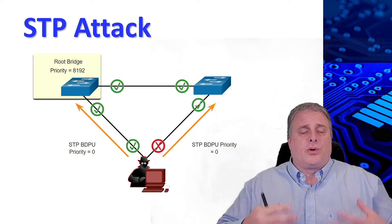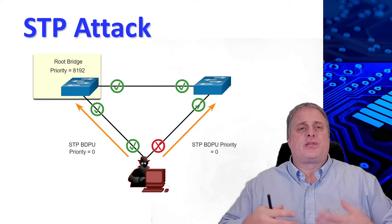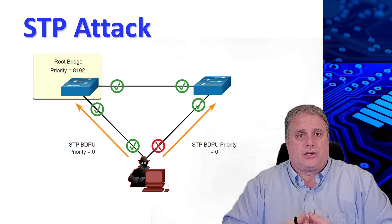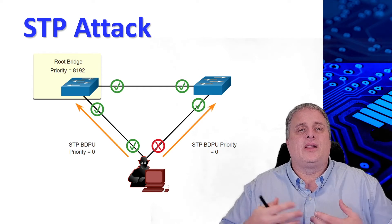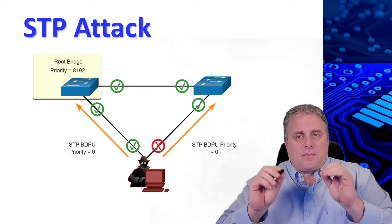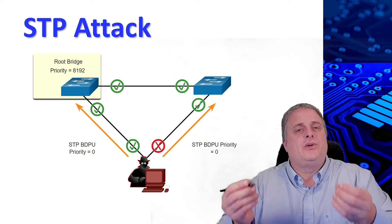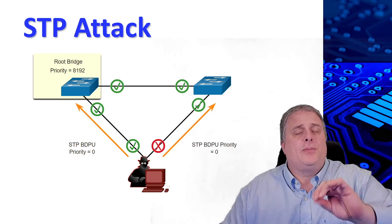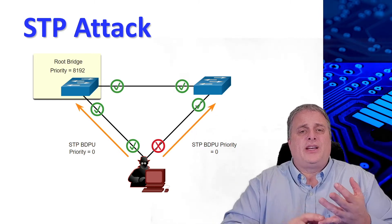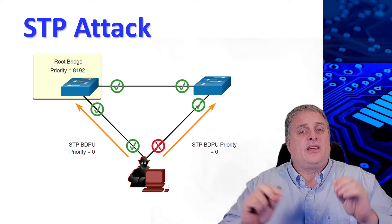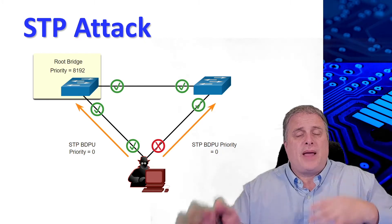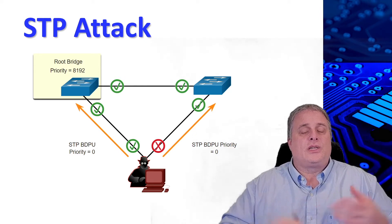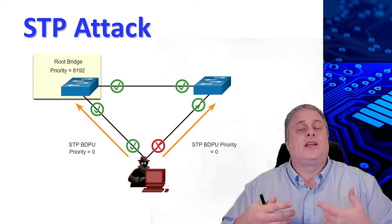Threat actors can manipulate the spanning tree protocol, STP, to conduct an attack by spoofing the root bridge and changing the topology of the network. Attackers can make their hosts appear as root bridges and therefore capture all traffic for the immediate switch domain. They can take their PC, spoof it into a root bridge, and because it's now the root bridge, it can capture all the traffic that passes through. To conduct an STP manipulation attack, the attacking host broadcasts spanning tree protocol bridge ID units, BPDU, containing configuration and topology changes that will force spanning tree recalculations. The BPDUs sent by the attacking host announce a lower bridge priority in an attempt to be elected as the root bridge.